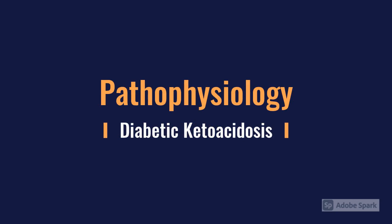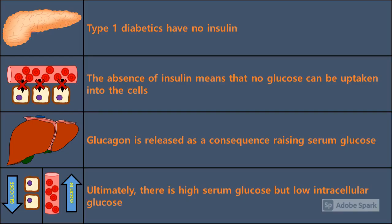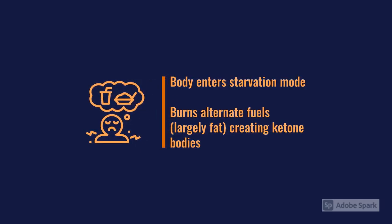In terms of pathophysiology, as most patients know, type 1 diabetics have no insulin — they lack insulin. That leads to the release of glucagon from the liver. Because of the lack of insulin, glucose cannot be taken up by cells, so your serum glucose is high even though your intracellular glucose is low. That causes two main problems. The first is a starvation mode — cells are depleted of glucose, so the body uses alternative fuel sources, burning fat, which generates ketone bodies.